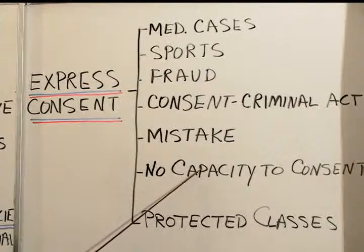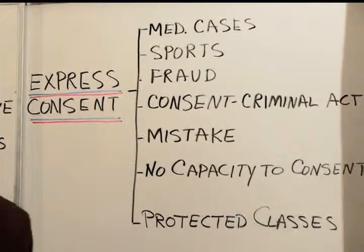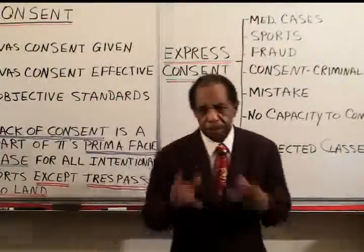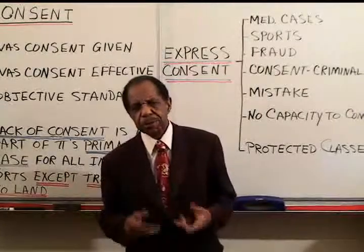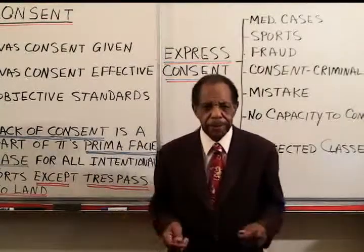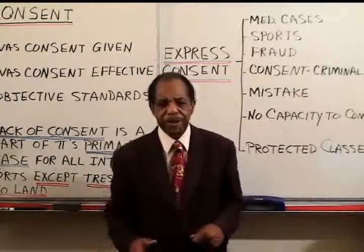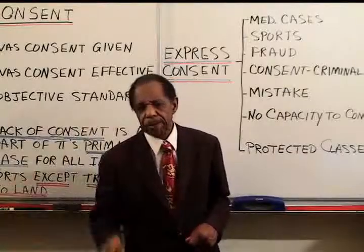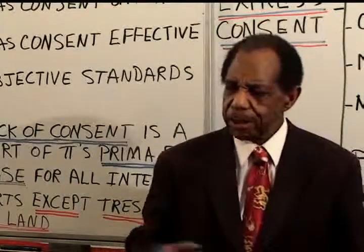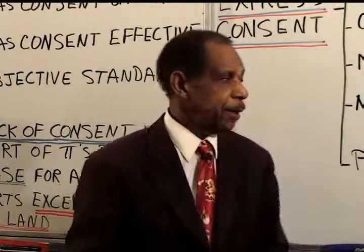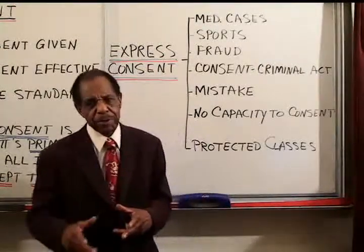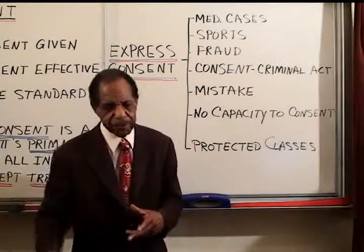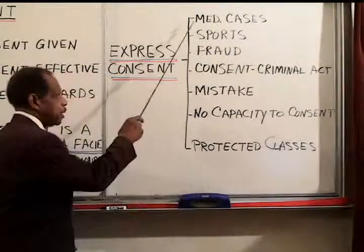No capacity to consent: minors and insane people do not have the capacity to consent. And finally, protected classes: sometimes if you're a member of a protected class, you can't waive the right. For example, if you work in a construction zone and OSHA says you must wear a hard hat, an employee can't waive the right to a hard hat and say it's okay. So when a person is a member of a protected class and they cannot waive the right and they try to waive it, the waiver is ineffective — the consent is ineffective.